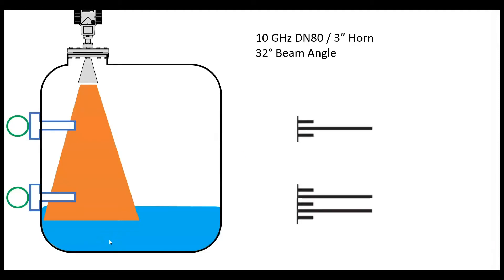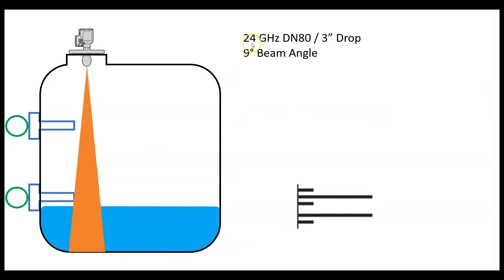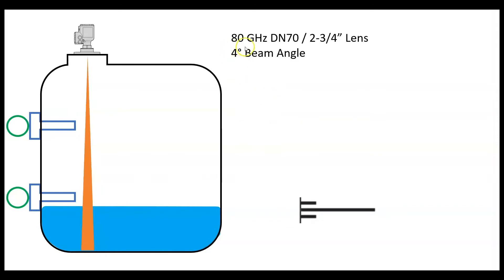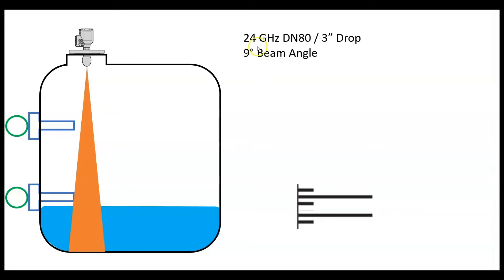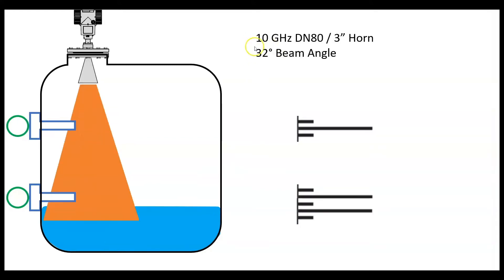When you look at the market today, I see three primary frequencies of radar: 10 gigahertz, 24 gigahertz, and 80 gigahertz. These frequencies may fluctuate a little bit each way - 77 gigahertz, 26 gigahertz, 8 to 12 gigahertz, things like that.